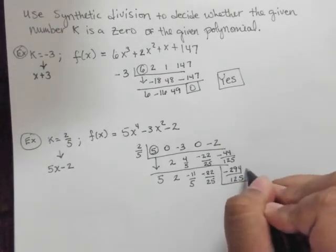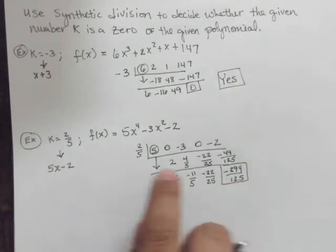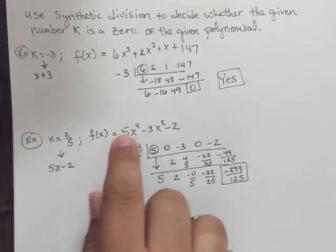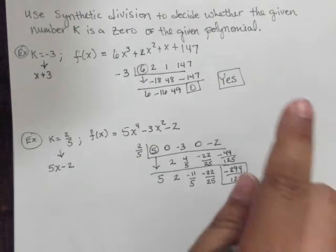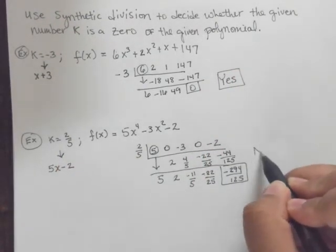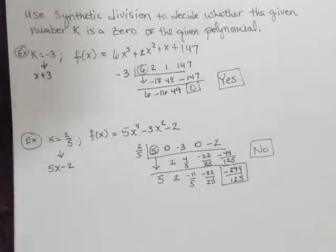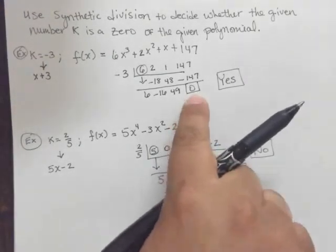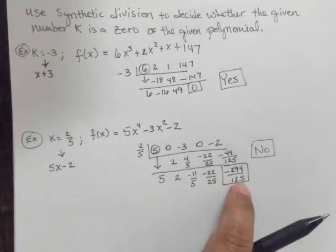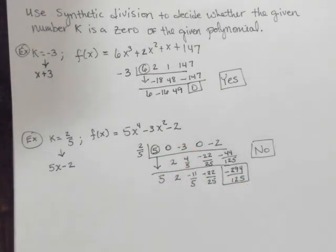So this is the remainder. This is the remainder right here. So is this 5x minus 2 a factor? Is it a 0 of the given polynomial? Well, we found out that no, it is not. So remember, if it's going to be a 0 of the polynomial, the remainder should be 0, as it was in this case. This one was some number, and clearly not a 0 of the polynomial.